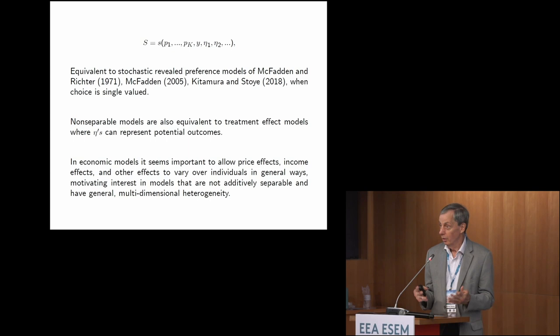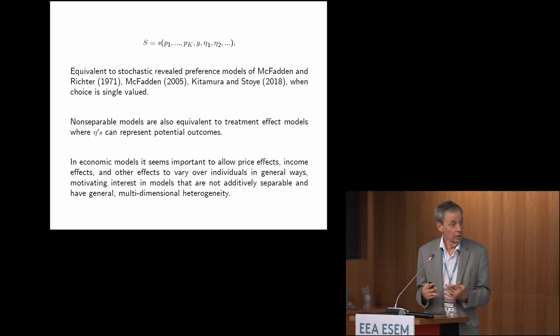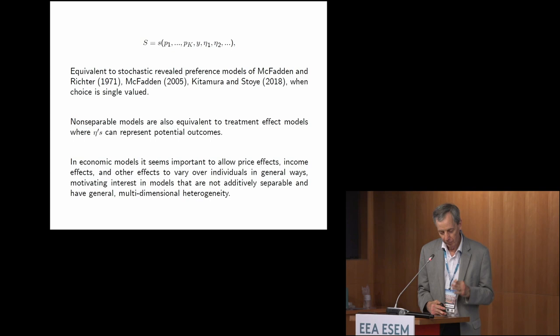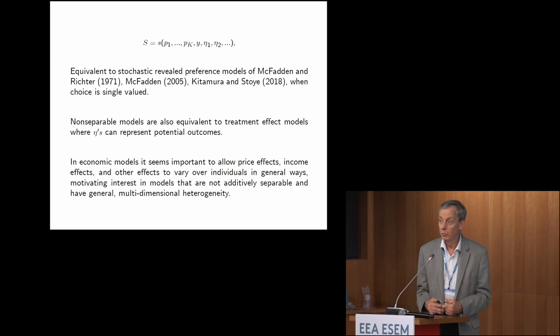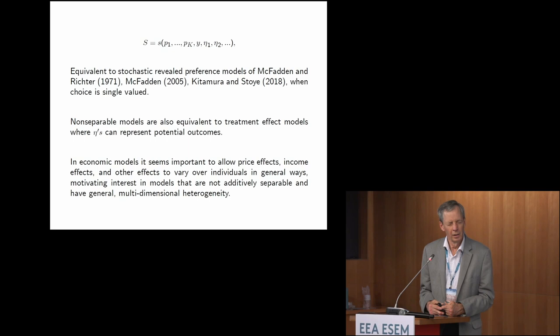This typical approach of estimating a share equation has been done since Deaton and Muellbauer and before. If you have a single choice and you're not indifferent across a range of outcomes, it's actually equivalent to the stochastic revealed preference models of McFadden, Kitamura, and Stoye. Normally in applied work, we think about demand as a single choice and not a correspondence.